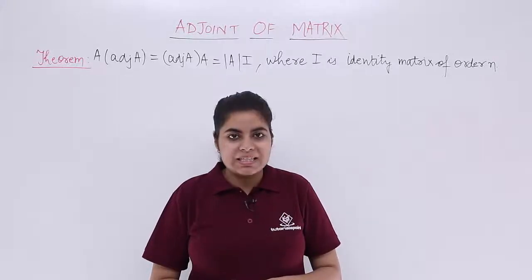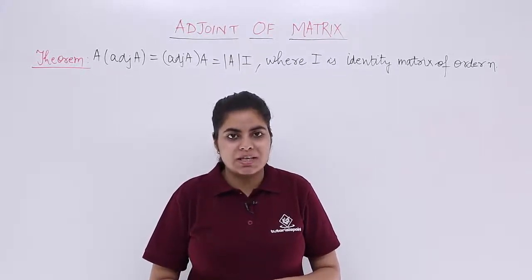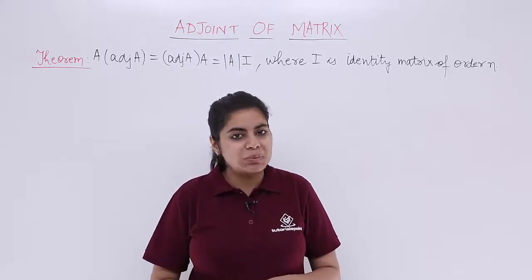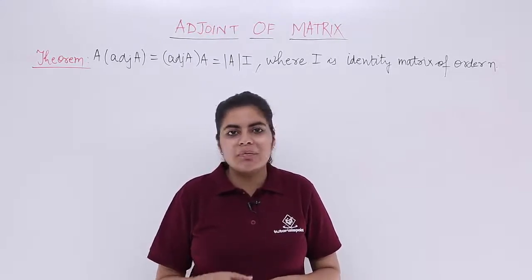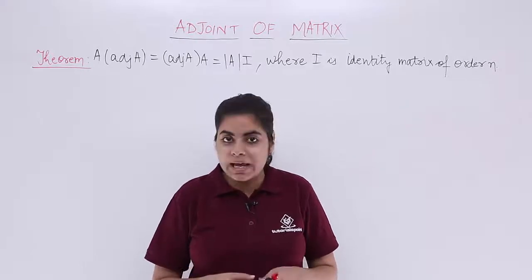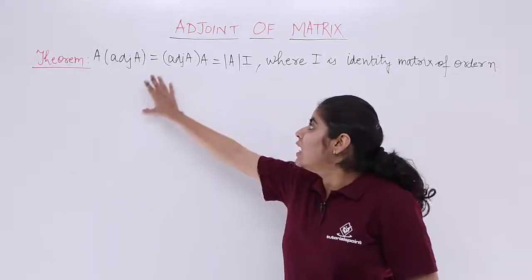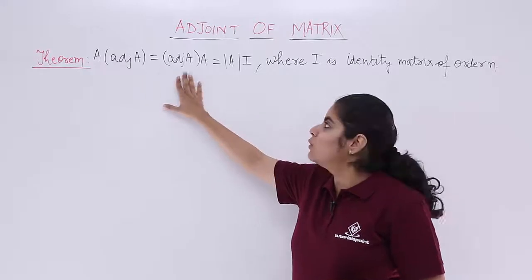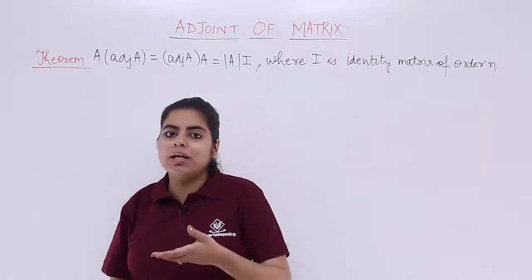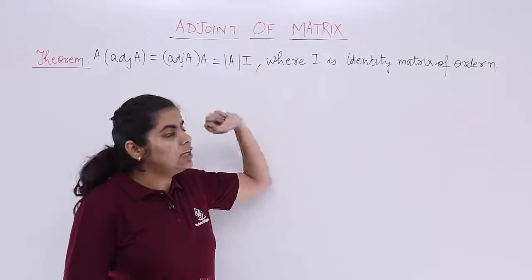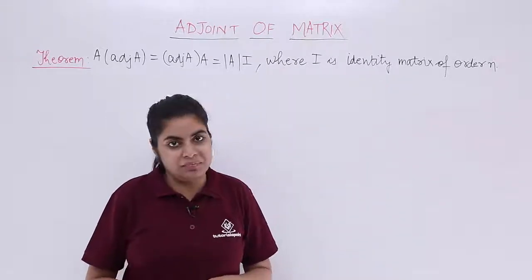In this video let's see a theorem based on adjoint of a matrix. We already know that adjoint is only possible for a square matrix. If the square matrix is A of order N, the theorem says that A into adjoint A is equal to adjoint A into A, which is also equal to determinant of A into I, where I is the identity matrix of the order N.